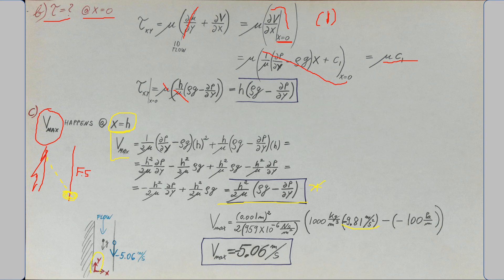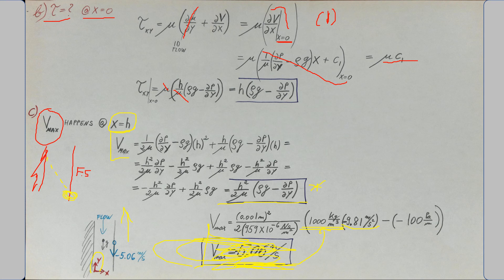The negative sign makes sense: our Y-axis points upward, so a negative value confirms the flow is going downward. If you got a positive value, that would imply fluid climbing up the wall, which is not physical. Note that if you use more precise density and viscosity values from tables your result may differ slightly. That's our final answer — please give the video a like and have a great day!